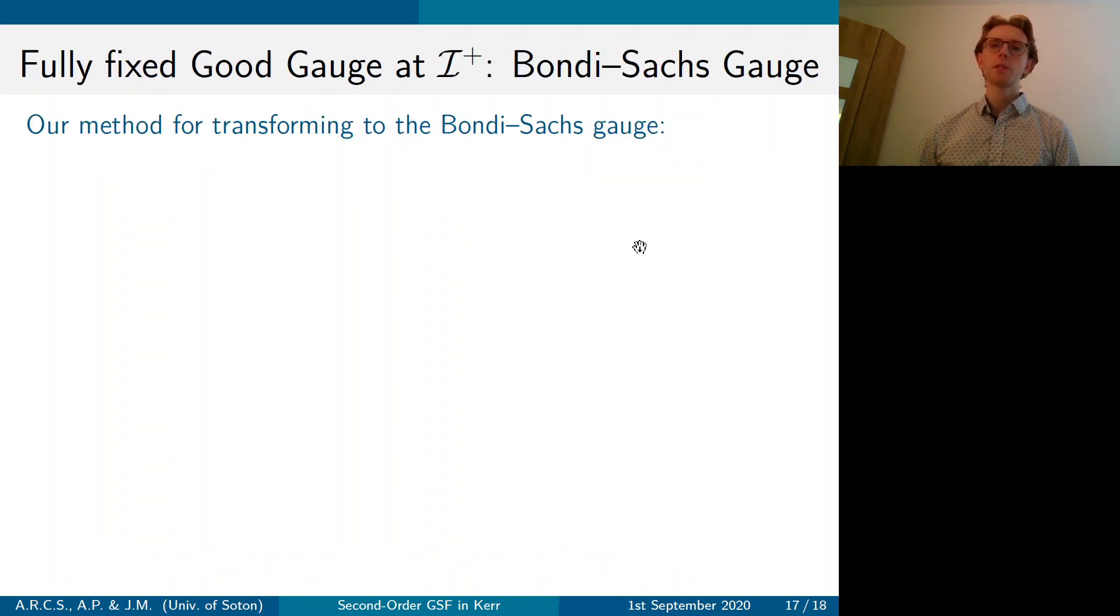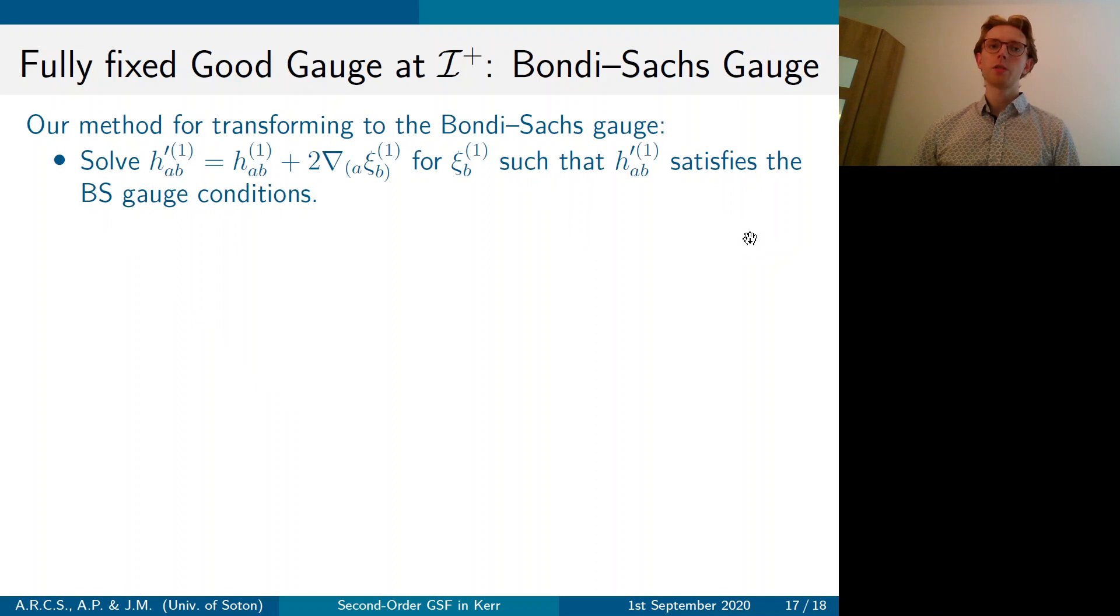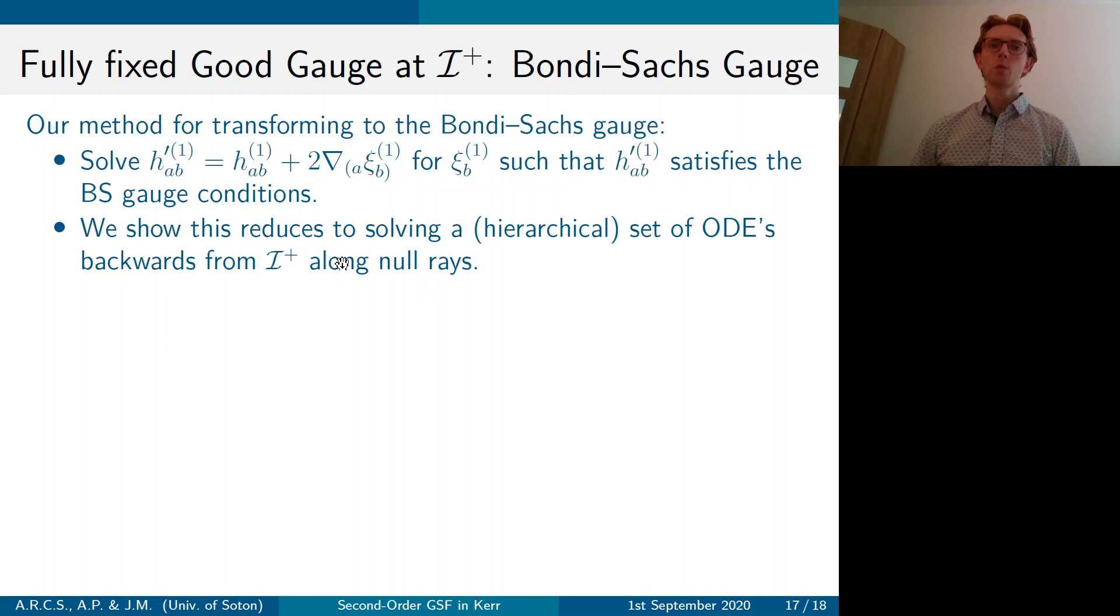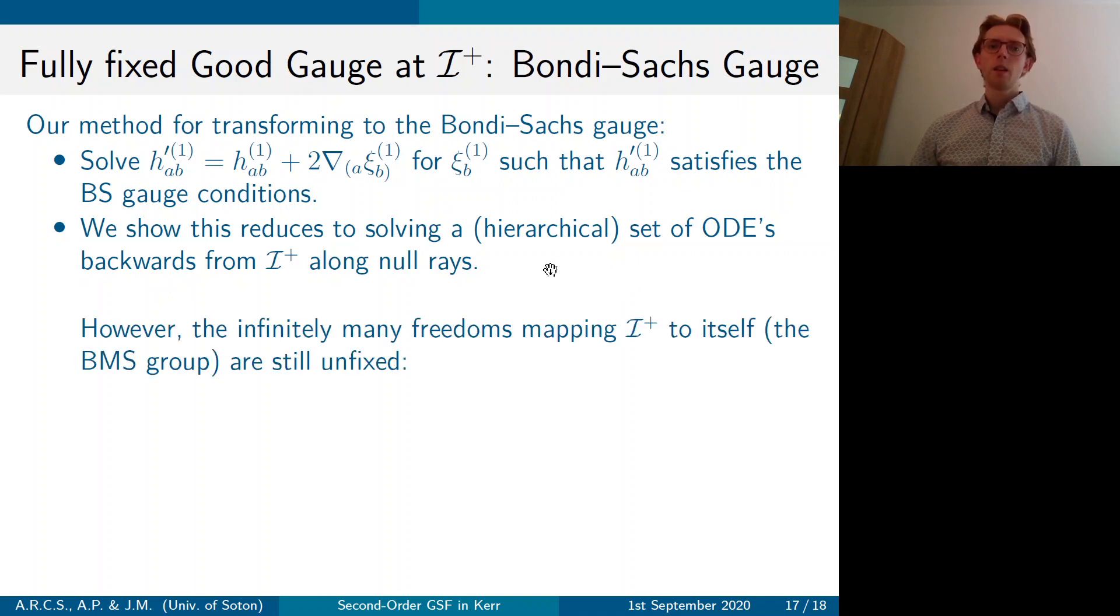So to transform to this gauge, we produce this method where we solve the gauge transformation equation for zeta 1, such that in the new gauge H prime, H prime is in the Bondi-Sachs gauge. It satisfies the Bondi-Sachs gauge conditions. And we showed that this reduces to a hierarchical set of ODEs, which you integrate backwards from scri plus along null rays.